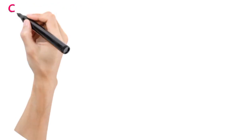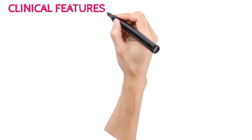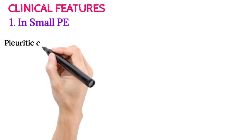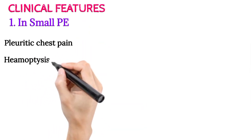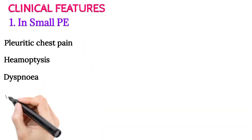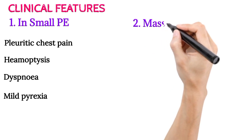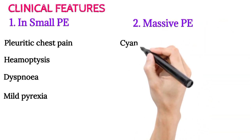Clinical features: In small pulmonary embolism, the features include pleuritic chest pain, hemoptysis, dyspnea, and mild pyrexia.